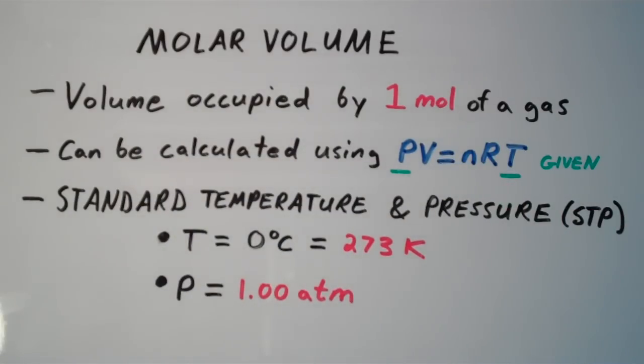And now I'm going to introduce something called standard temperature and pressure or STP. And standard temperature and pressure is defined as when your temperature is equal to zero degrees Celsius, which is equal to 273 Kelvin.